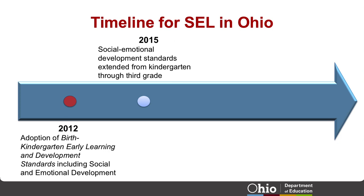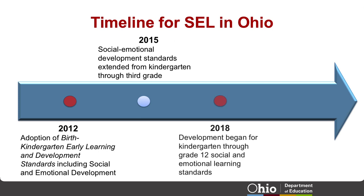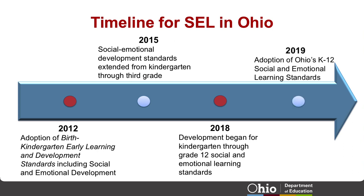In 2015, the Ohio Department of Education, with approval from the State Board of Education, extended the social-emotional development standards from kindergarten through third grade. In 2018, the Ohio Department of Education began development of social and emotional learning standards for kindergarten through grade 12 through a stakeholder-driven process. Then, in June 2019, Ohio's kindergarten through grade 12 social and emotional learning standards were adopted. The Ohio Department of Education will provide resources to support implementation for district and building leadership, teachers, and families that will be available on the Department SEL webpage.